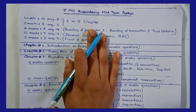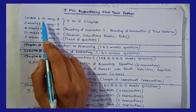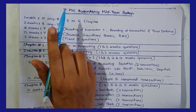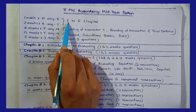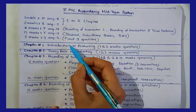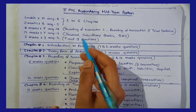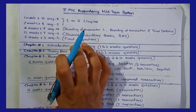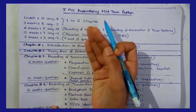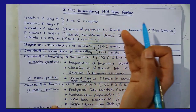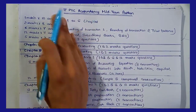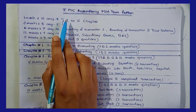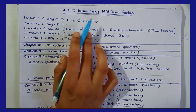In 1 and 2 mark questions, you need to know all chapters. In the first two chapters, you will see all terms, meanings, objectives, characteristics, advantages, and disadvantages. We will see all the important terms in the journal — there are all terms in this.